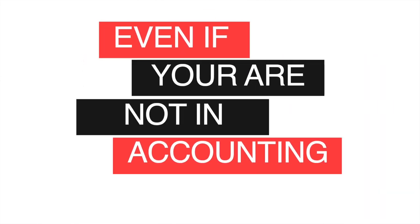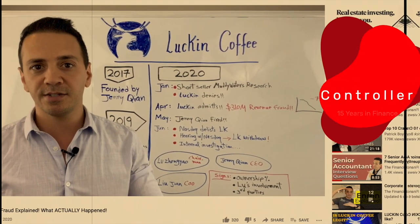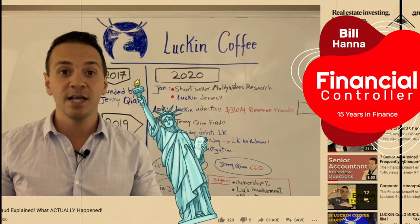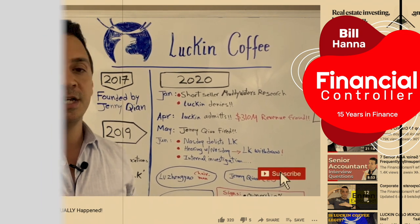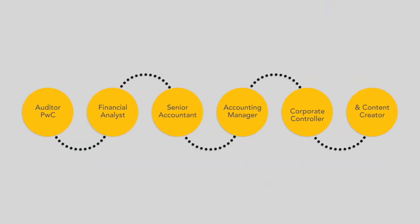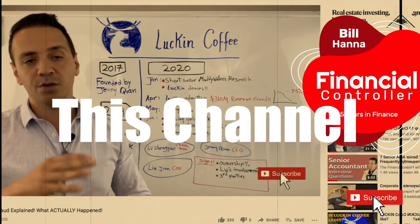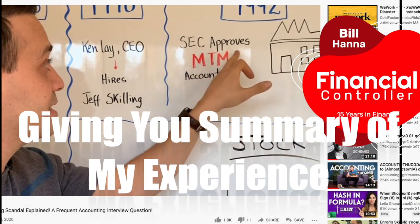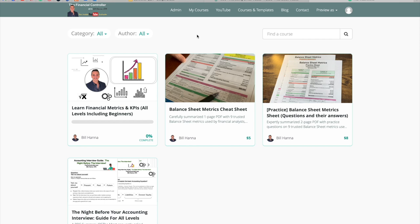This video is meant to be your basic guide to revenue recognition, where we break things down and make it understandable even if you're not in accounting. My name is Bill Hannah. I'm a financial controller and a licensed CPA in the state of New York with over 15 years of experience in finance. I started out at PricewaterhouseCoopers as an auditor, then transitioned to private industry, working my way up from financial analyst all the way to corporate controller.